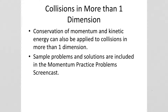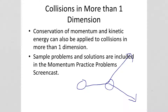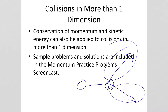Collisions can also happen in more than one dimension. For example, with pool balls, a glancing blow — not straight on — might send one ball in one direction and the other ball in another direction. Momentum is still conserved, but we have to use vectors to solve for the velocities of each ball after the collision. We'll see example problems for collisions in more than one dimension in the momentum practice problems screencast.